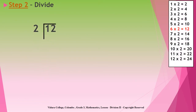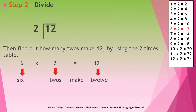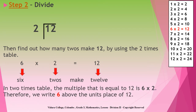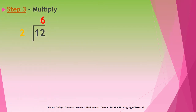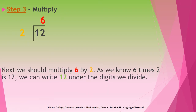Step two is doing the division by using the two times table. First, you should find out how many twos make twelve by using the two times table. You will see that six twos make twelve. Therefore, we write six above the units place of twelve. Step three is to multiply six by two. As we know, six times two is twelve. Therefore, we write twelve under the digit that we divide.